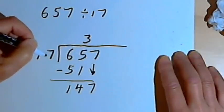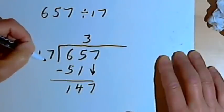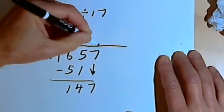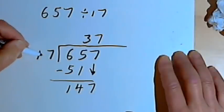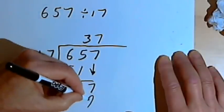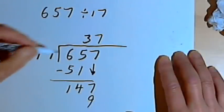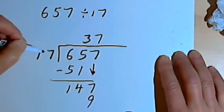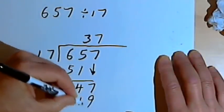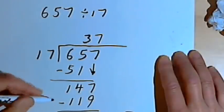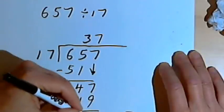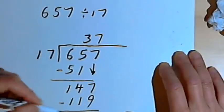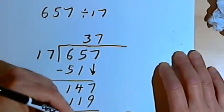If this was a 20, then maybe it would go in 7 times. So let's just try that and see what happens. So 7 times 17. 7 times 7 is 49. I have to carry a 4. 7 times 1 is 7, plus 4 is 11. When I subtract 147 minus 119, I get an 8 and a 28.